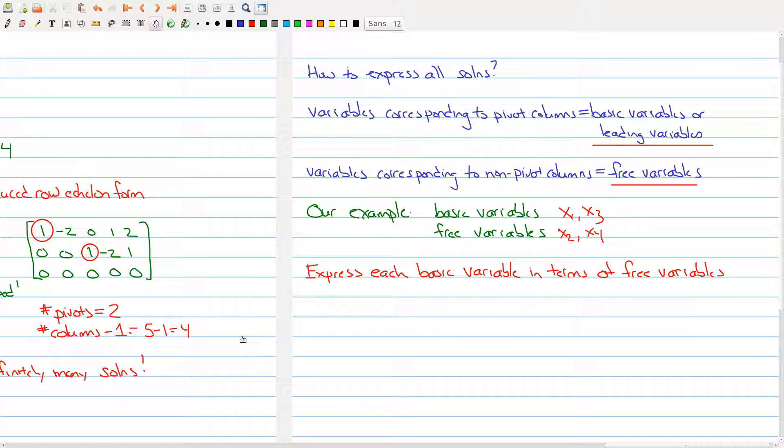Once you have it in reduced row echelon form, take your matrix that you found and rewrite all the equations. So we have x1 minus 2x2 plus x4 is equal to 2. And then the second row tells me that x3 minus 2x4 is 1. And what we want to do now is express each basic variable in terms of free variables. So that means you want to have a basic variable on the left-hand side and everything on the right-hand side being free variables. So we would have x1 is equal to 2x2 minus x4 plus 2. And over here we would have x3 is equal to 1 plus 2x4.